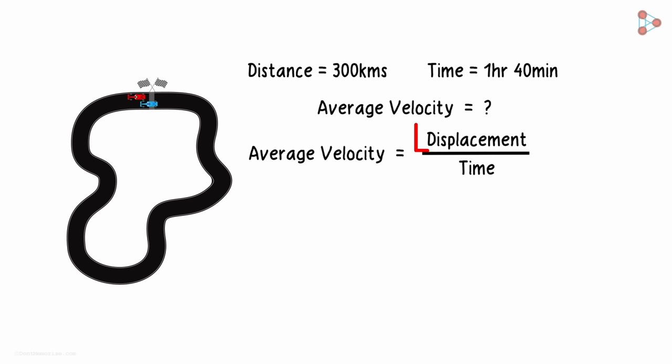First, can you tell me what your displacement is? You started and finished at the same point. So your displacement is 0. 0 divided by the time taken which is 1 hour 40 minutes equals 0. That puts your average velocity for the race today at 0 meters per second.